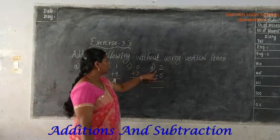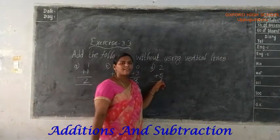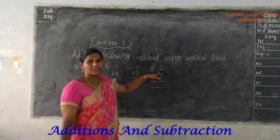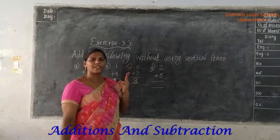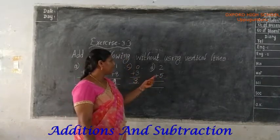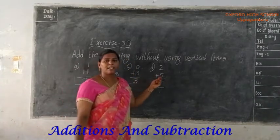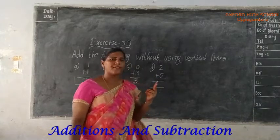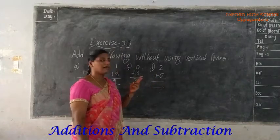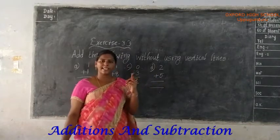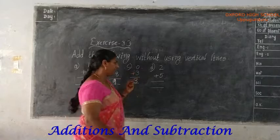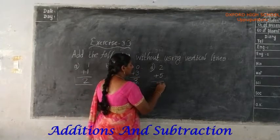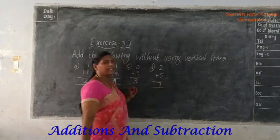Next: 2 plus 5. First number is 2, we want to take 2 fingers. Second number is 5. After 5 we want to count: 6, 7. Answer is 7.